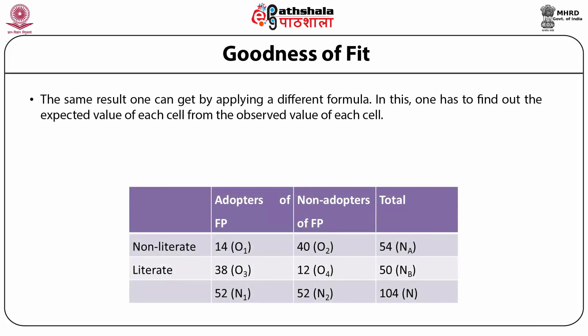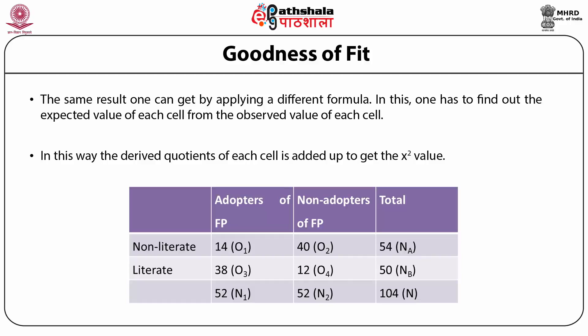Goodness of fit is another way to apply the chi-square test. One finds the expected value of each cell from the observed values. The square of the difference between each cell's observed and expected value is divided by the expected value, and these quotients are added to get the chi-square value. The formula is: χ² = Σ[(Observed − Expected)² / Expected]. As shown in the table, the chi-square value comes out to be 26.02. It must be noted that a correction is required in both formulae if any cell has a value less than 5.